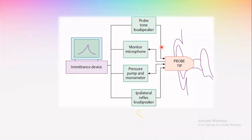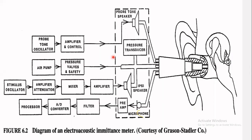In detail, the probe tone is generated by an oscillator, then amplified and delivered through the probe tip. The air pump or pressure transducer provides various pressures. A third speaker provides the ipsilateral stimulus for reflex measurement. Whatever bounces back from the ear canal is measured by the microphone and analyzed by the processor.